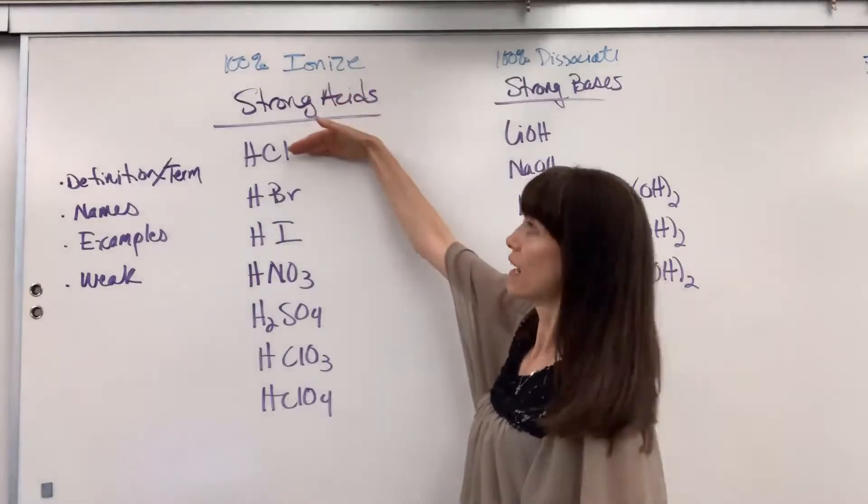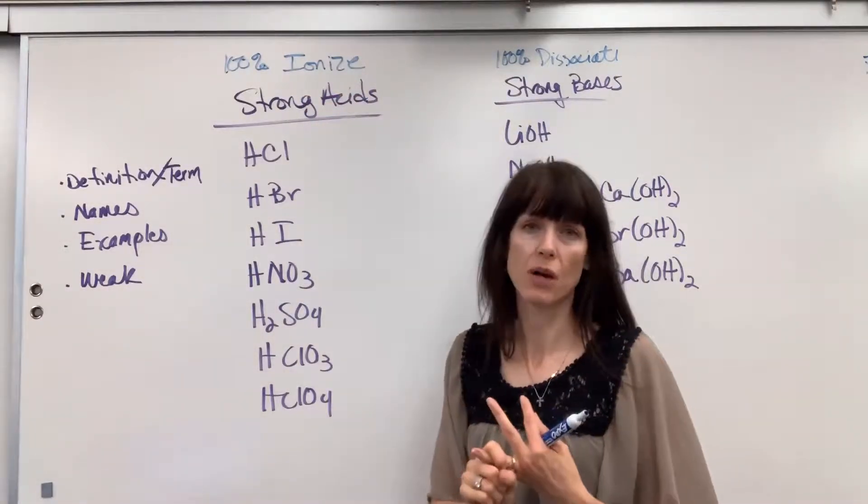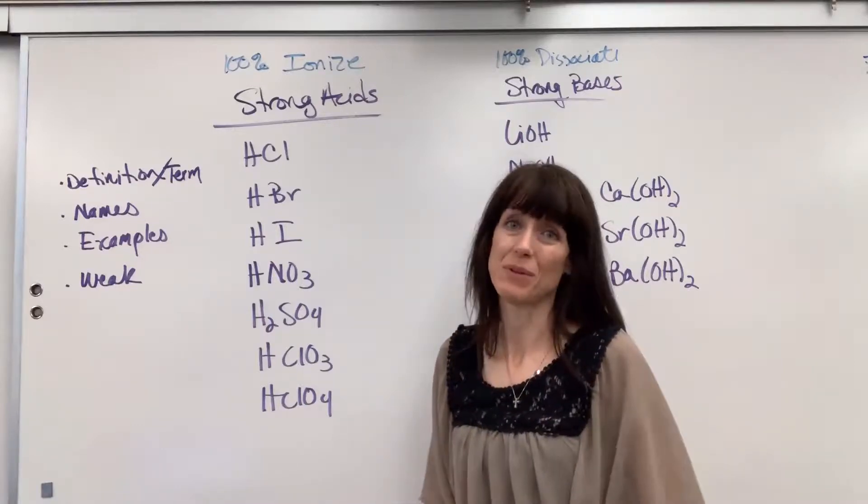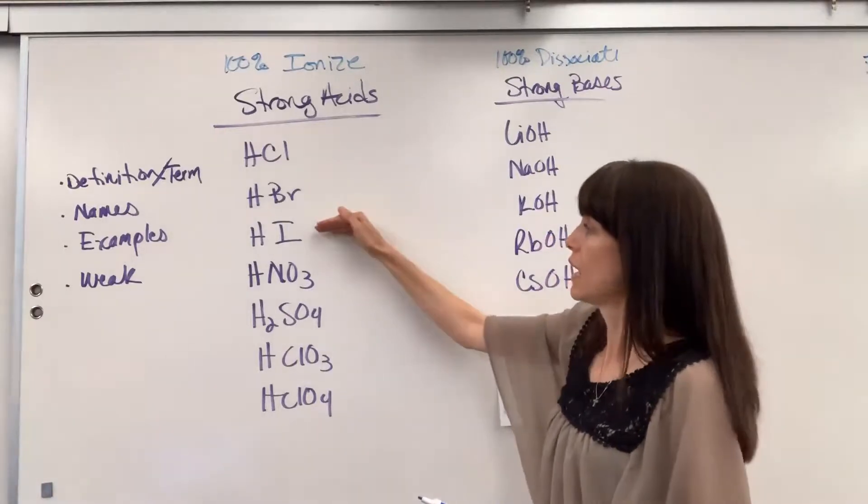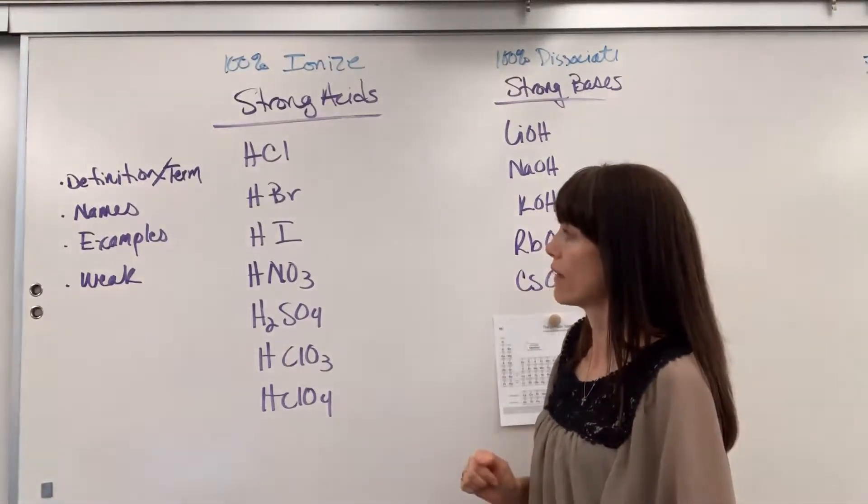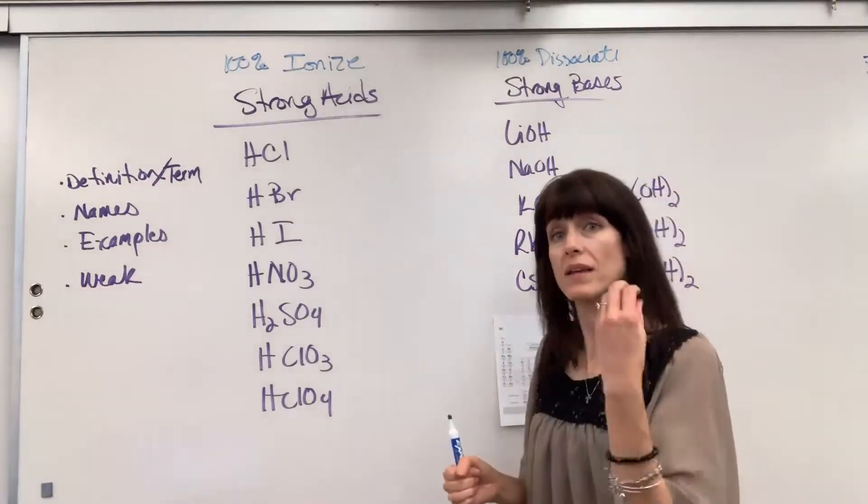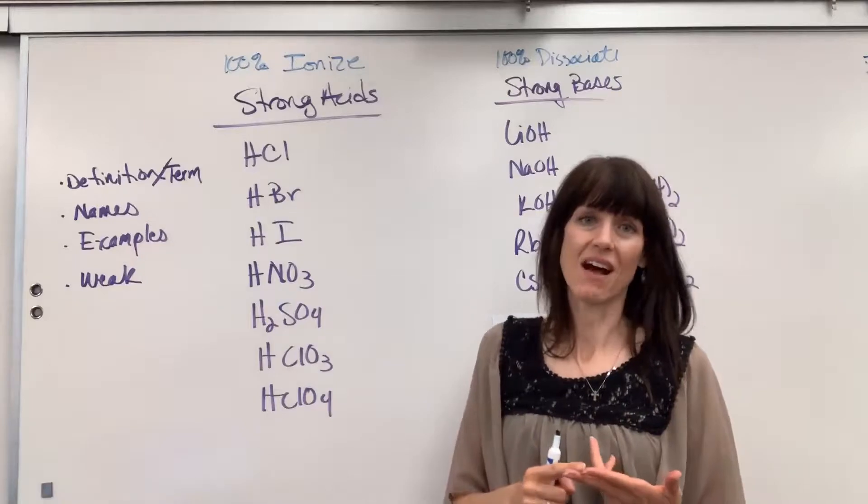So HCl, hydrochloric acid. Remember binary acids when you have hydrogen and one non-metal, this is the only time you use the term hydro. Hydrochloric acid, hydrobromic acid, hydroiodic acid. Next, we have our oxy acid. So a polyatomic with a hydrogen. This is where you have to look at the endings ate and ite.